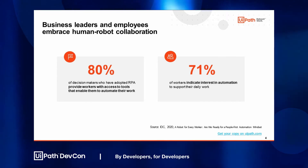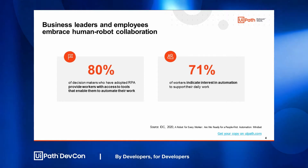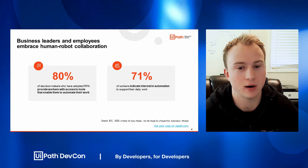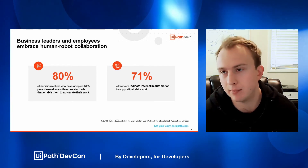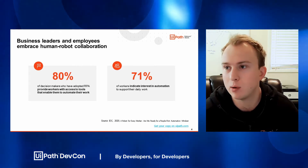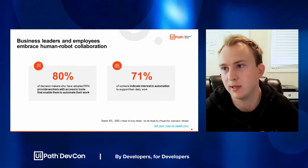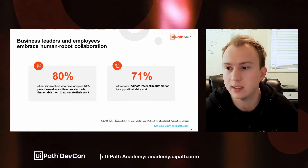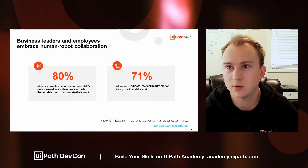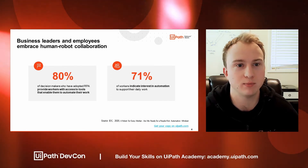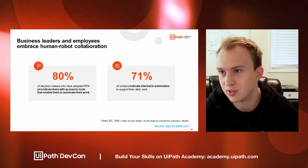So why are we talking about this? When we think about it, 80% of the people in companies who have gone towards adopting RPA are really intending to provide their employees with access to the tools to not only build automation, but use automation. And then taking that a step further, 71% of workers in these companies are actually interested in automation to support their daily work.